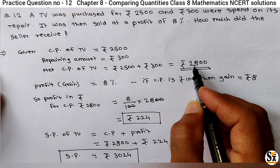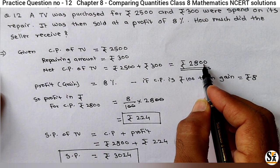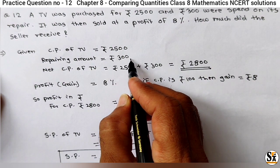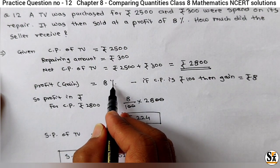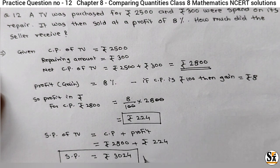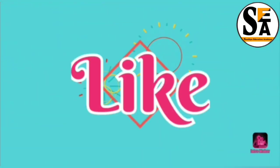Where net CP is 2800, original CP is 2500, and repairing cost is 300. And profit is 8%, that is in percentage. And in Rs, profit is Rs 224. So net selling price is Rs 3024.